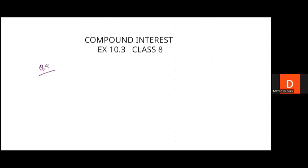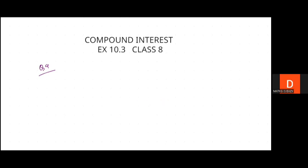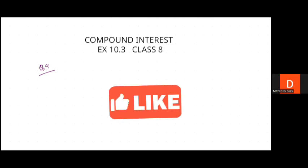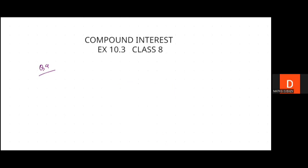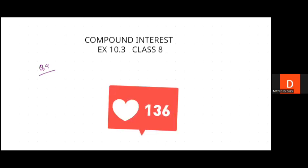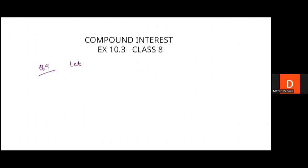Question number 9 says: the difference between compound interest and simple interest on a certain sum of money for two years at 5% per annum is Rs. 25. Find the sum. We will start by assuming the sum — let the principal be P.